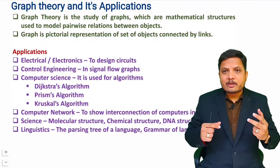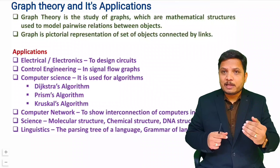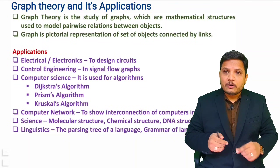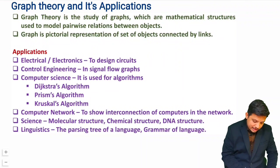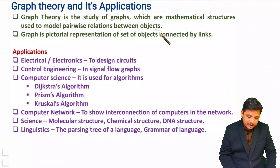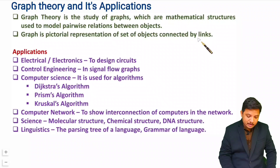Different elements and related things I'll explain in next videos. In this video I'll cover the basic meaning of graph theory and its applications. Graph theory is a study of graphs, which are mathematical structures used to model pairwise relations between objects. A graph is a pictorial representation of a set of objects connected by links.